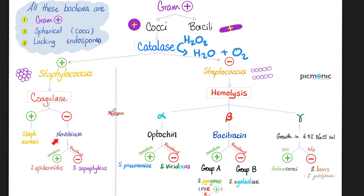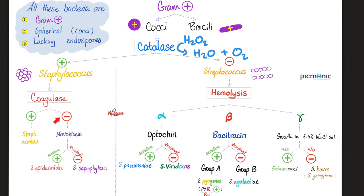If you don't have coagulase, you could be Staphylococcus epidermidis or Staphylococcus saprophyticus. How do I tell the difference? Novobiocin — that's an antibiotic. If novobiocin kills the bacteria, it will be Staphylococcus epidermidis. If the bacteria is resistant to novobiocin, it will be Staphylococcus saprophyticus, which is today's topic. So, Staphylococcus saprophyticus is gram positive, coagulase negative, and novobiocin resistant.